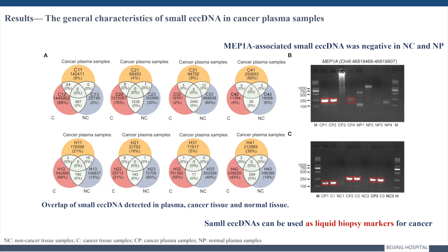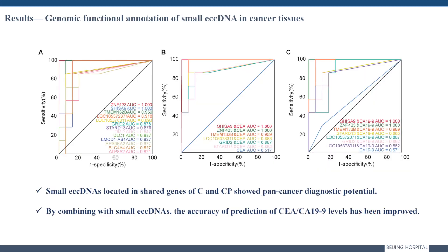Next, we compared the sequence homology of small ECC-DNAs between plasma and paired tissue. Some shared ECC-DNAs were identified and validated as biomarkers, among which the MEP1A-associated small ECC-DNA was detected in all cancer patients but not in normal people, indicating that small ECC-DNAs can be used as a liquid biopsy marker for tumors. Other selected ECC-DNA molecules also showed high pan-cancer diagnostic value in an independent cohort study. Meanwhile, by combining with CEA, the accuracy of pan-cancer prediction could be further improved.